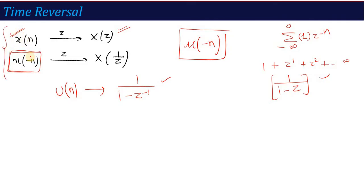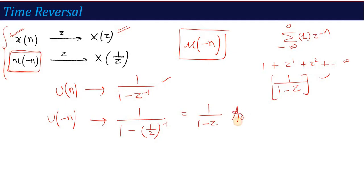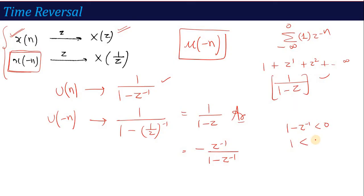Now, to calculate the ROC, the function should be in z^(-1) form. If it is not in z^(-1) form, we can write: taking minus z as common, it becomes -z^(-1) / (1 - z^(-1)). So the Z-transform of u(-n) can also be written as -z^(-1) / (1 - z^(-1)). Now calculate the ROC: for u(-n), 1 - z^(-1) < 0, so 1 < z^(-1), meaning z < 1 — this is the ROC for u(-n).